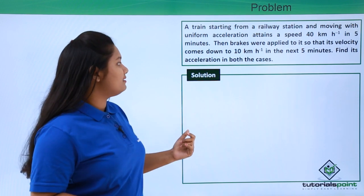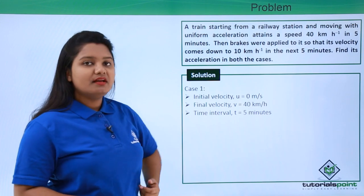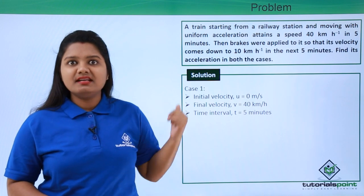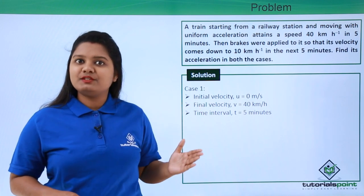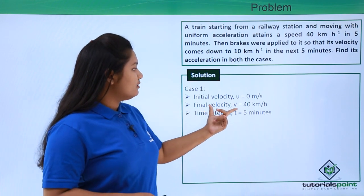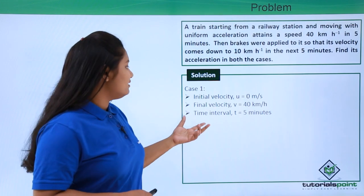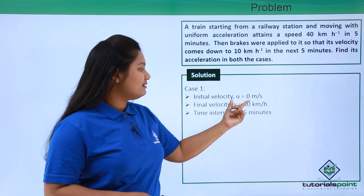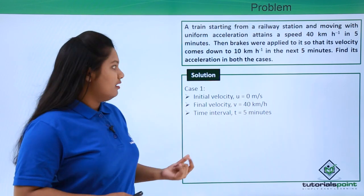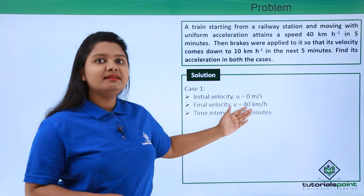Let's solve this problem. First we write what is given for Case 1. The initial velocity u equals zero meters per second, since the train starts from rest at the railway station. The final velocity is 40 kilometers per hour, and the time taken for this increase in velocity is five minutes.